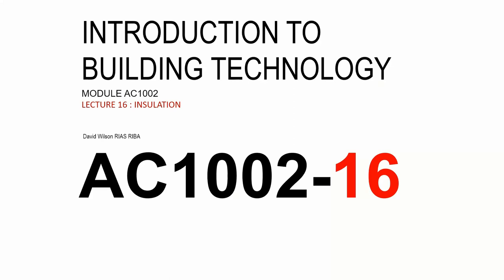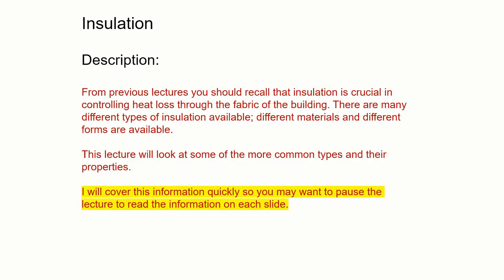Welcome to the 16th lecture for AC 1002 Introduction to Building Technology. This lecture integrates with the information in previous lectures about the building envelope and it covers insulation. From the previous lectures we should recall that insulation is crucial for controlling heat loss through the building fabric. If you haven't watched the lecture on heat loss you should watch that before this one. There are many different types of insulation and we can break them down into subtypes, so this lecture is going to look at some of the more common types and their properties.